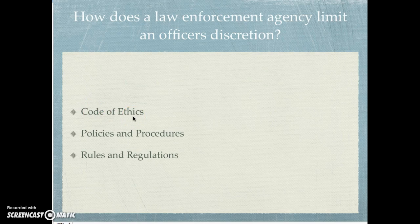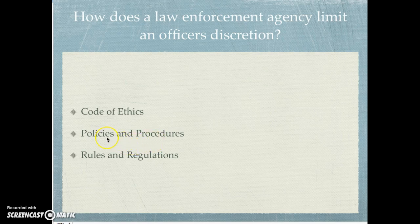There are three primary tools: a code of ethics — and I'll provide a link to a sample code of ethics in the announcements — and then the organization will have policies, procedures, rules, and regulations. Very few jobs don't have some form of these. Many organizations and companies have policies and procedures, rules and regulations. For example, wherever you work, there's likely a requirement for when you call in sick — a time limit, or a doctor's excuse requirement. These are all part of the procedures, rules, and regulations within an organization.